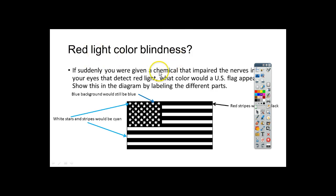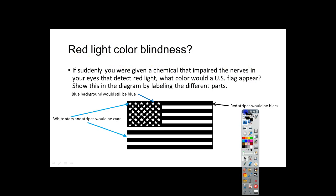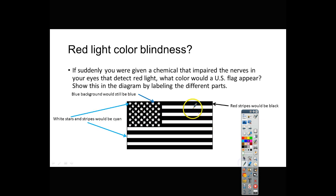The next question is about red light color blindness. If a chemical impaired your eyes so they can't detect red light, what color would a US flag appear? The red stripes would be black because you can't see what's reflected. The white areas — including the stars — would appear cyan, because white is a combination of red, green, and blue, and without red you're left with green and blue, which is cyan. The blue background would still appear blue.